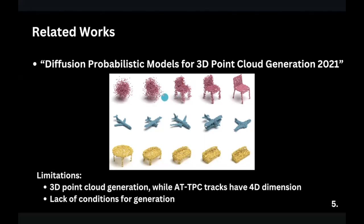There are two problems with this article that we needed to work on. The first is that in this work the generation of 3D structures was carried out, while we needed to generate 4D structures — one of our team members dealt with this problem. The second problem is the lack of conditions for generation. In the article the authors claimed to implement conditional generation, but the truth is they simply used different models for different types of objects — if there were 10 objects they needed 10 models — which is inconvenient, and I needed to deal with this problem.